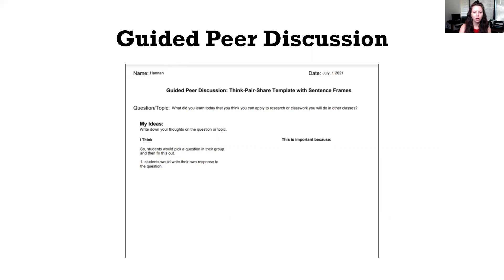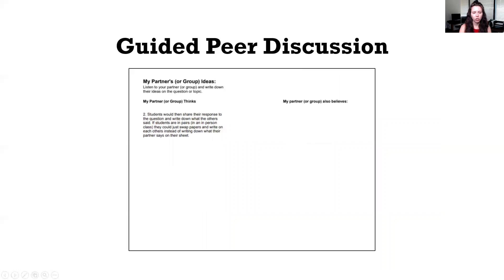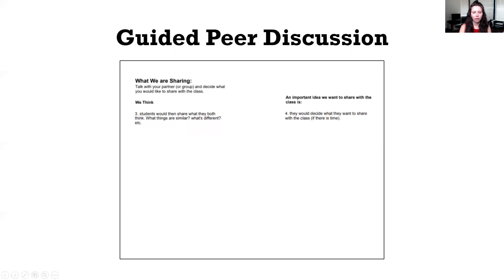The Guided Peer Discussion is broken down into sentence frames. Part one: My Ideas — write down your thoughts on the question or topic. Part two: My Partner or Group Ideas — listen to your partner or group and write down their ideas on the question or topic. Lastly, part three: What We Are Thinking — talk with your partner or group and decide what you would like to share with the class.